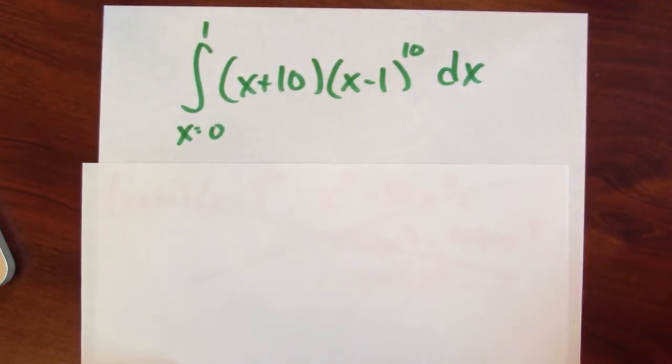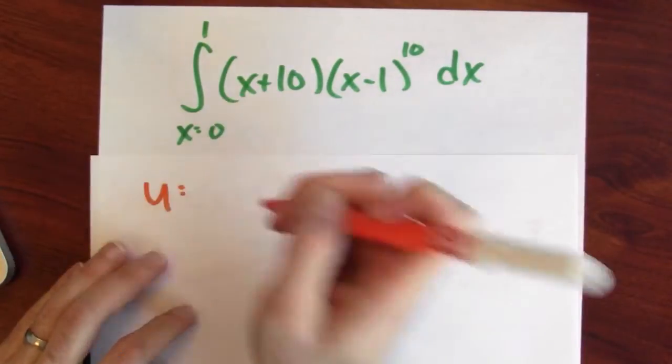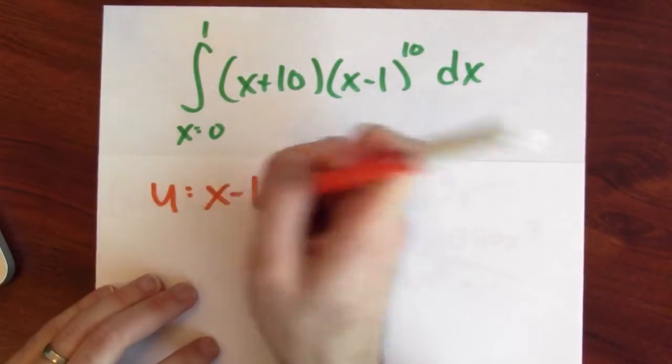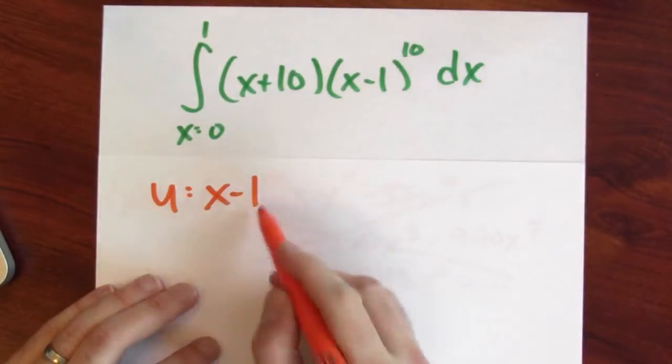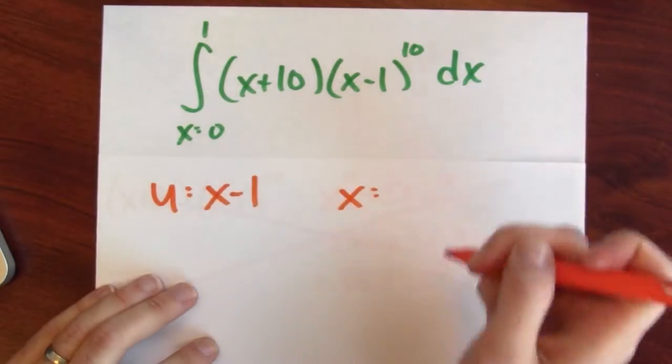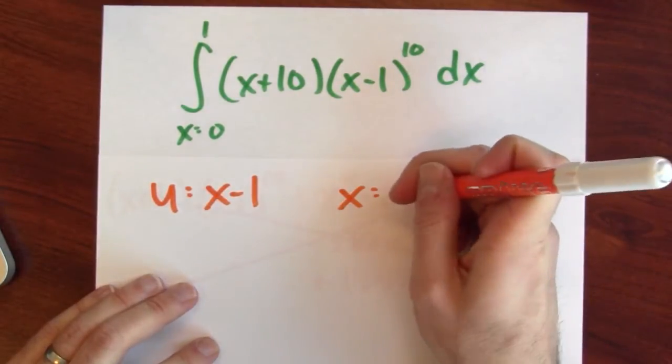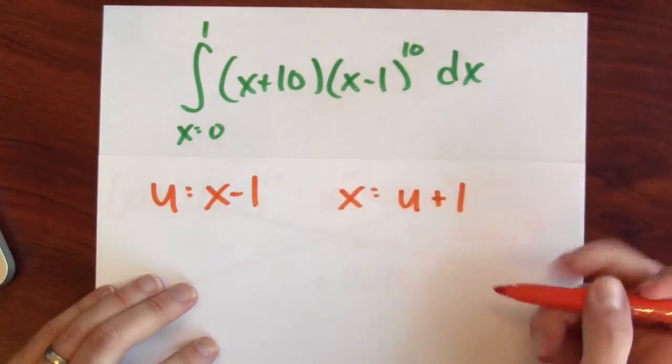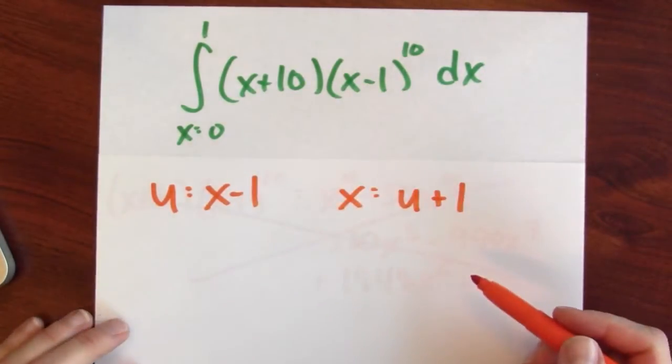let's set u equal x minus 1. And I could solve this for x. That means that x is u plus 1. And if I just add 1 to both sides.